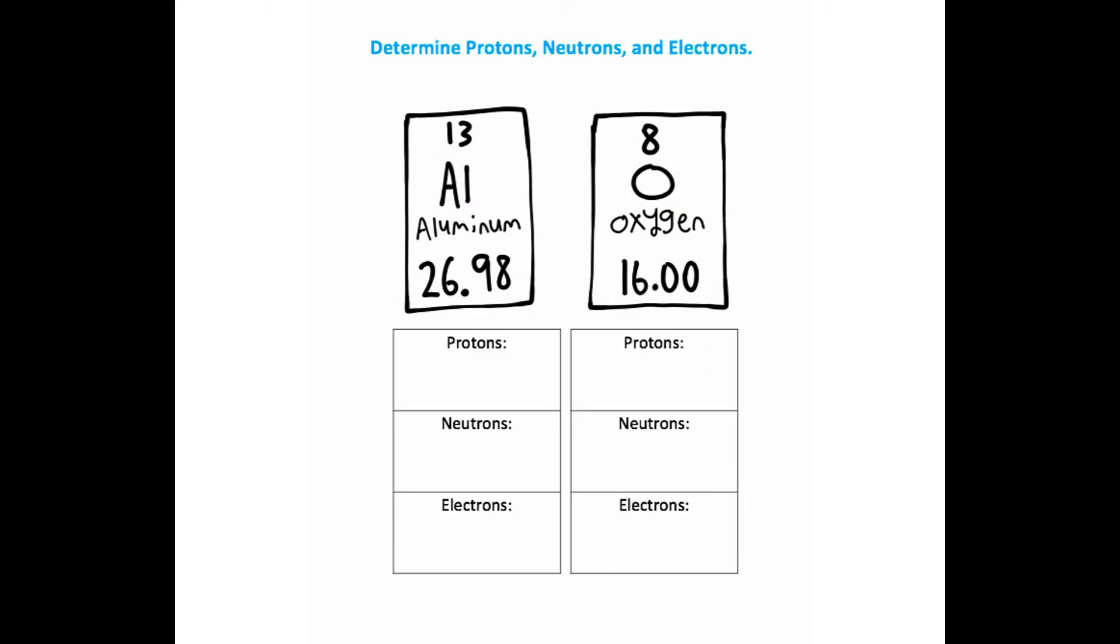Now what we're trying to do is determine the number of protons, neutrons, and electrons we have in each element. The number of protons is just the atomic number listed above. To determine neutrons, take your rounded molar mass and subtract off the number of protons that you have.